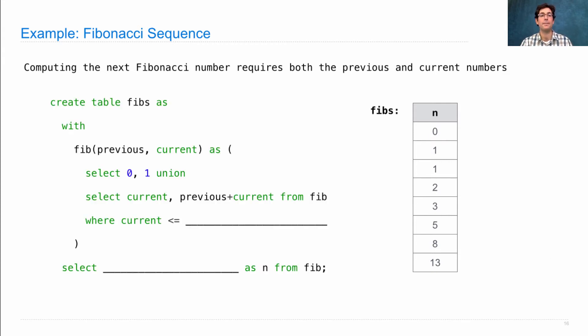We can generate that with the following SQL statement. Create a table Fibs as a local table, Fib previous and current. Previous and current starts out with zero and one. And then we select current and previous plus current from Fib. We need some condition to tell us when to stop. And we need to select just one column from Fib in order to get a one column table.